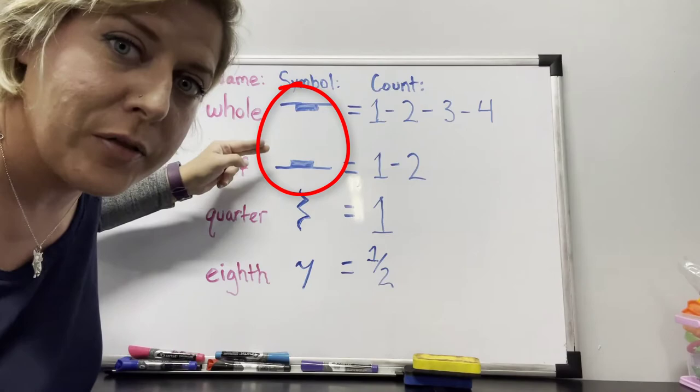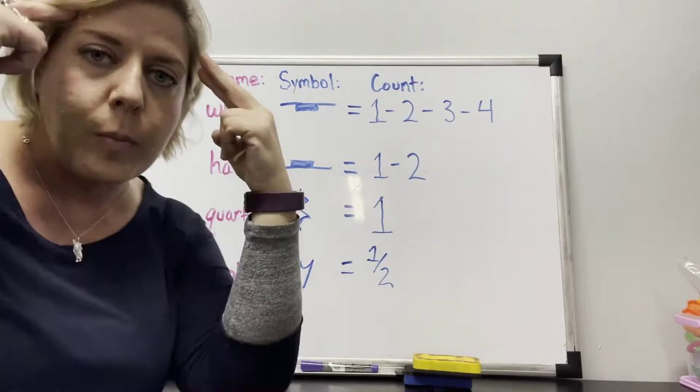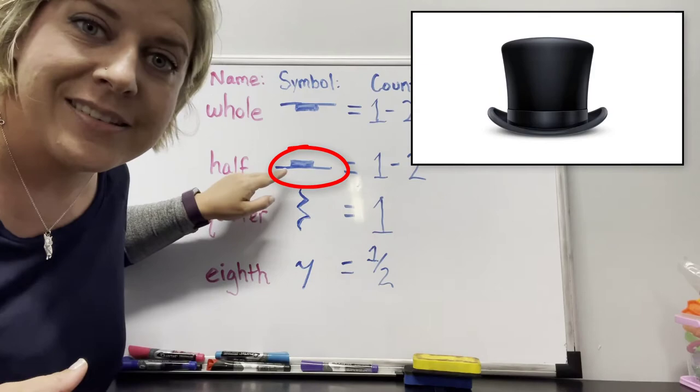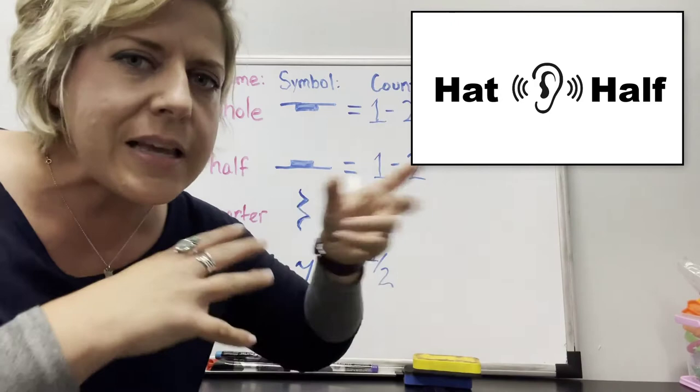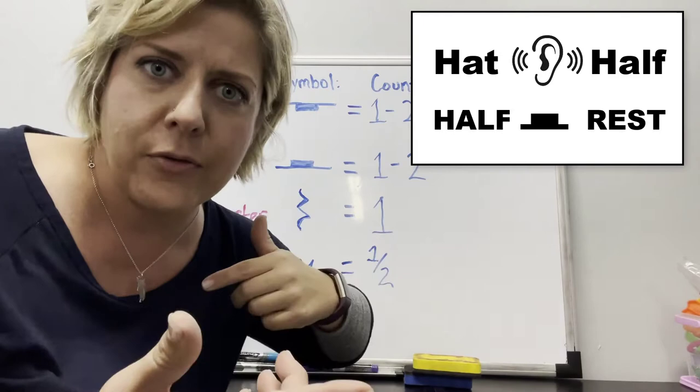So the way I remind myself to tell them apart is that this one basically looks like a top hat, and hat kind of sounds like half, maybe half hat. That's how I remember. Hat, half, half rest. This helps a lot of my younger students and it helped me.